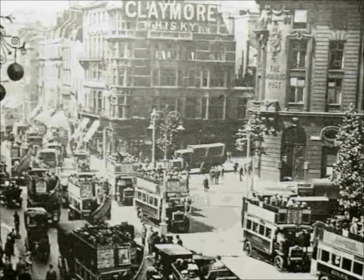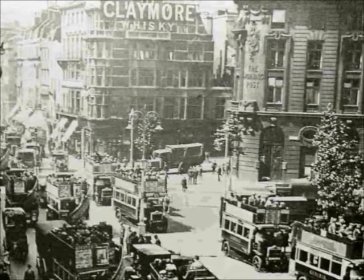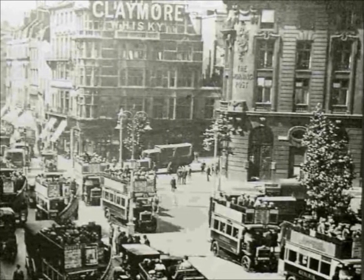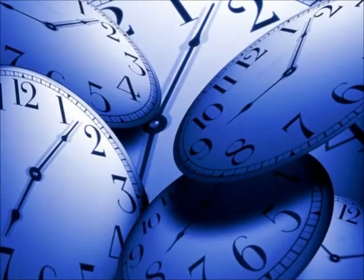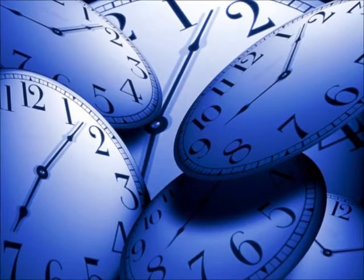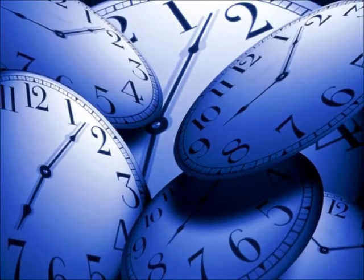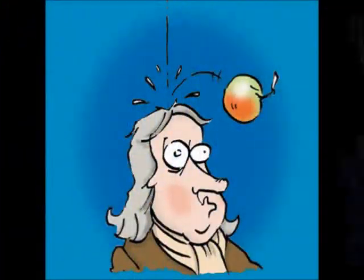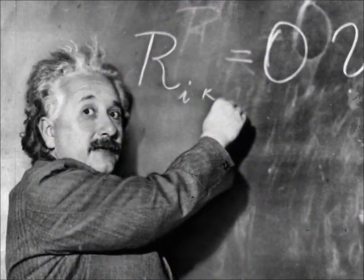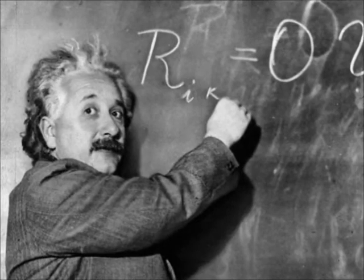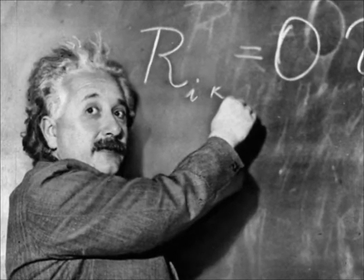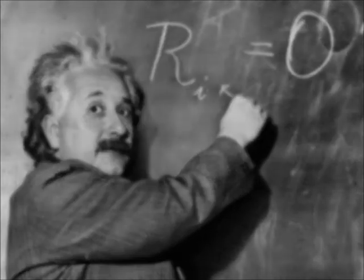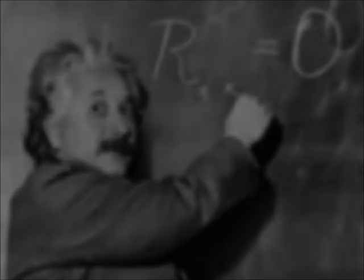Until the 1930s, cosmologists believed that the universe was infinite in both space and time — that is, it had always existed — and static. This seemed the only way it could be stable using Newton's law of gravitation. Even Einstein modified his theory of general relativity to make it consistent with the steady-state universe.